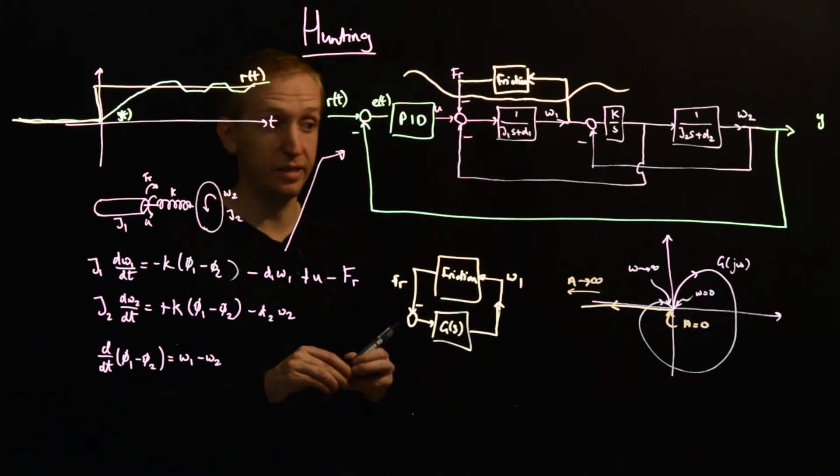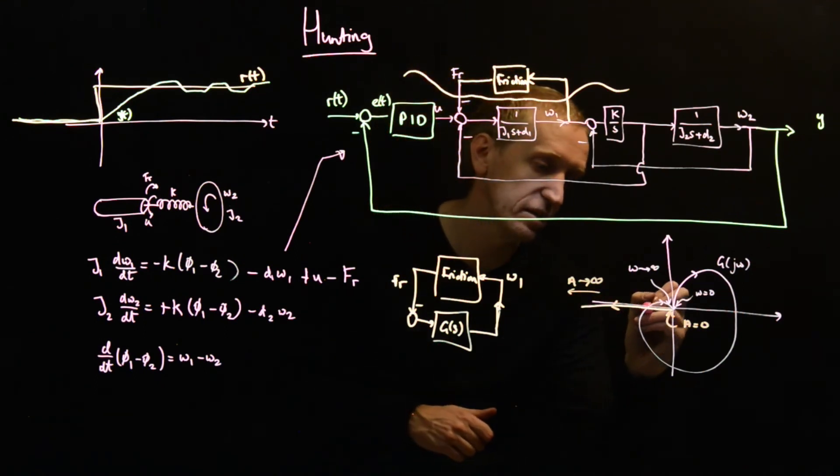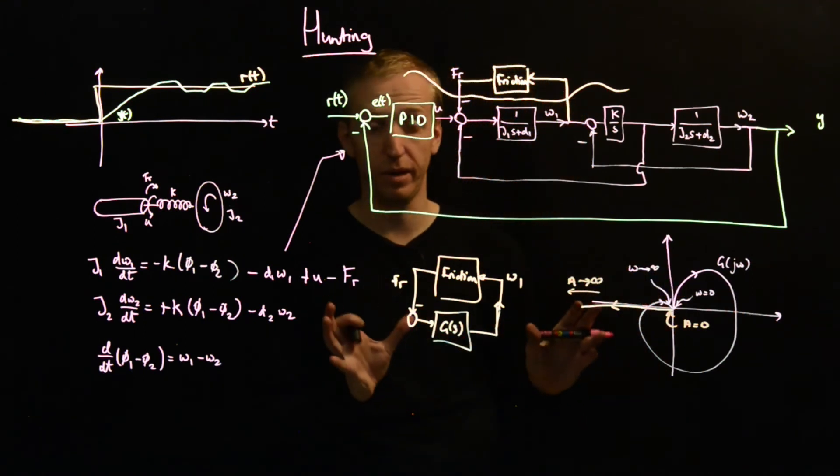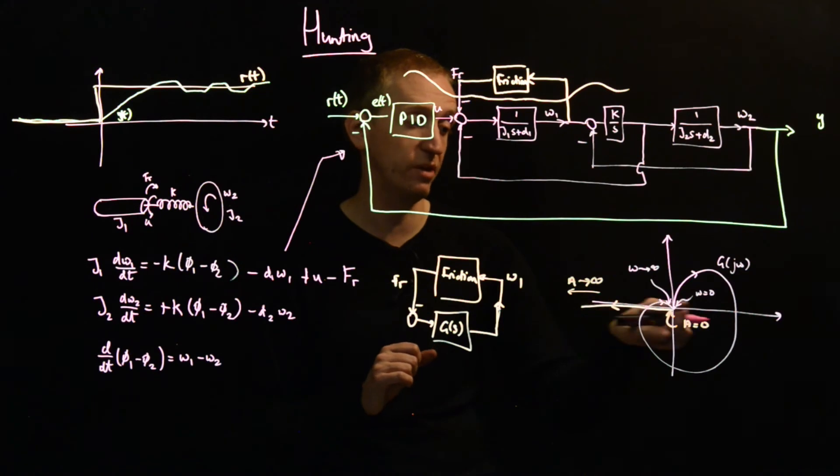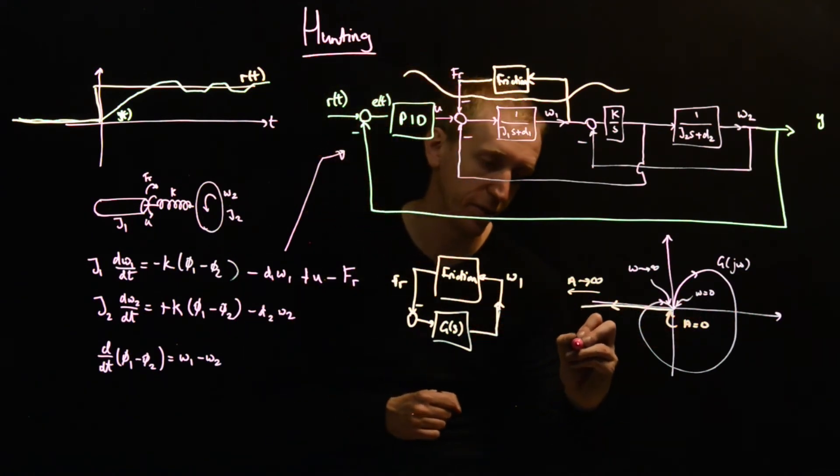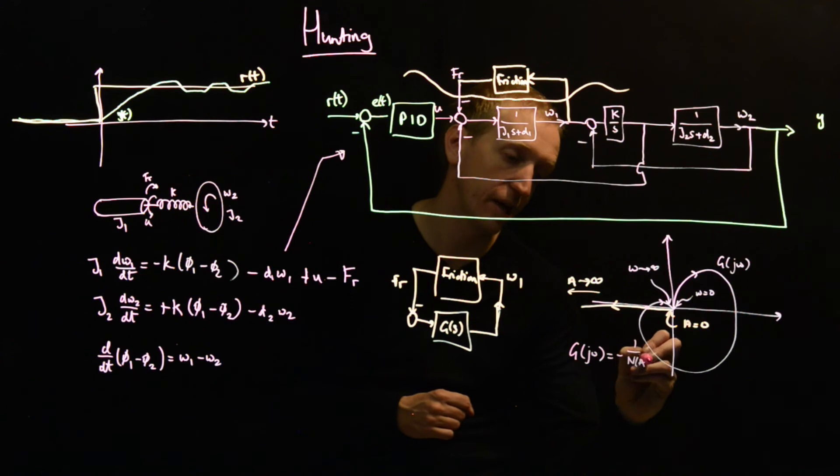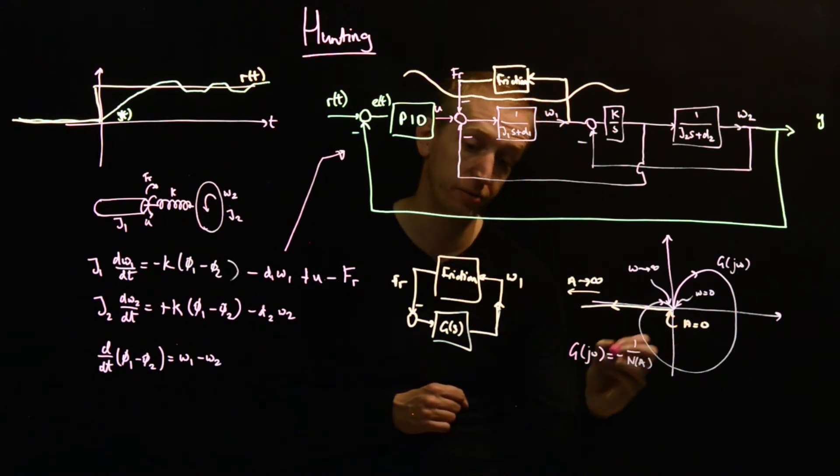And so do we predict a limit cycle in this situation? Well, yes, because we get an intersection between our Nyquist curve and our describing function curve. So the condition of harmonic balance is fulfilled. So that's G of j omega is equal to minus one over n of a, where this is the describing function of our friction model.